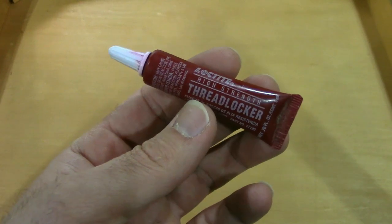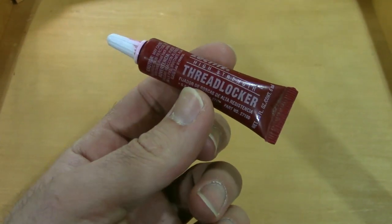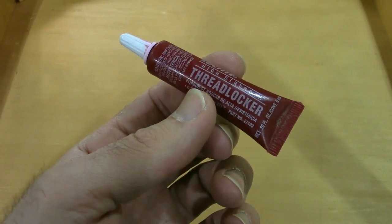This is the 0.2 ounces container, and it's about just over five bucks. You can get it at a Home Depot.